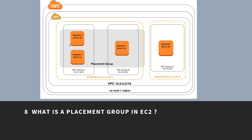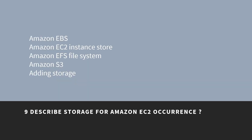Describe the storage of Amazon EC2. Amazon EC2 provides flexible, cost-effective, and easy-to-use data storage options for your instances. Each option has a unique combination of performance and durability and can be used independently or in combination. These storage options include Amazon EBS, Amazon EC2 Instance Store, Amazon EFS file system, Amazon S3, and additional storage.